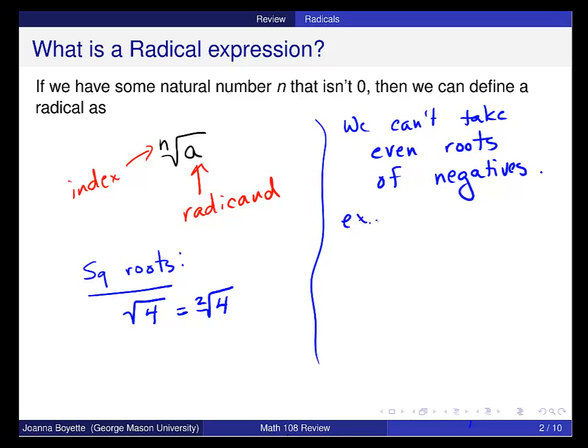So, for example, the square root of negative 4 is not a real number. If you've ever studied complex numbers, which we won't really use in this class, it's a complex number. And if you remember that, negative 4 is equal to 2i. But we won't really use complex numbers in this class.